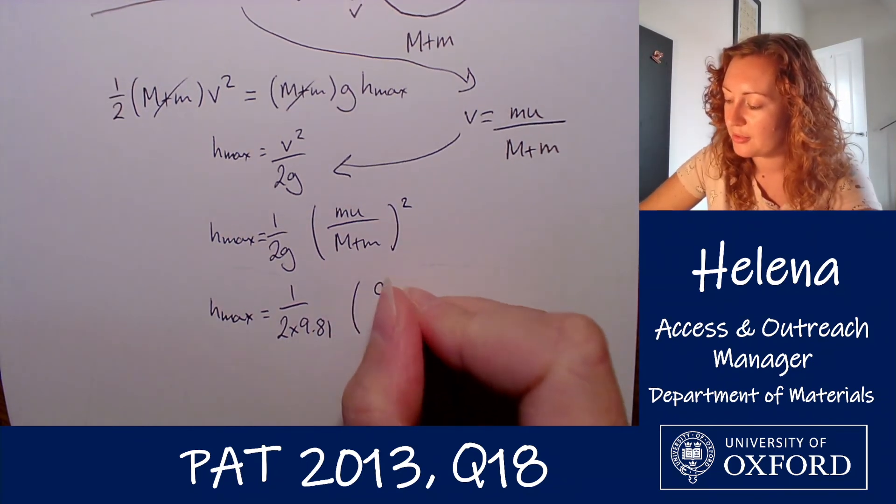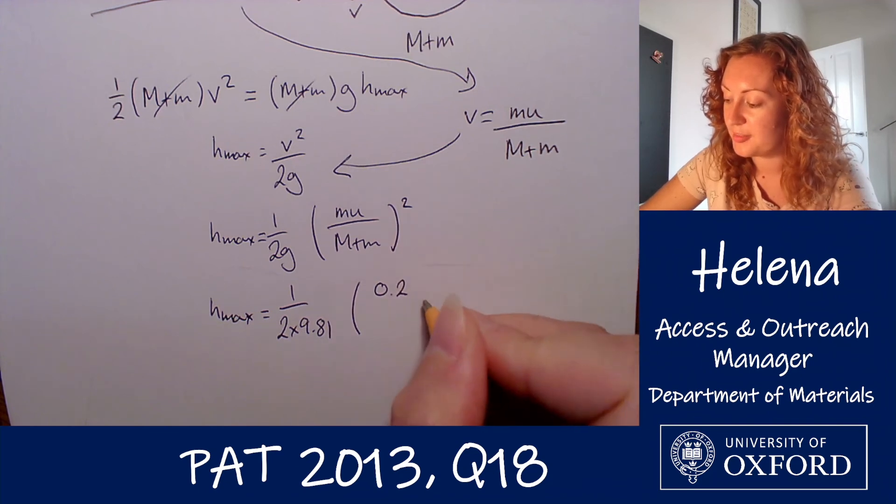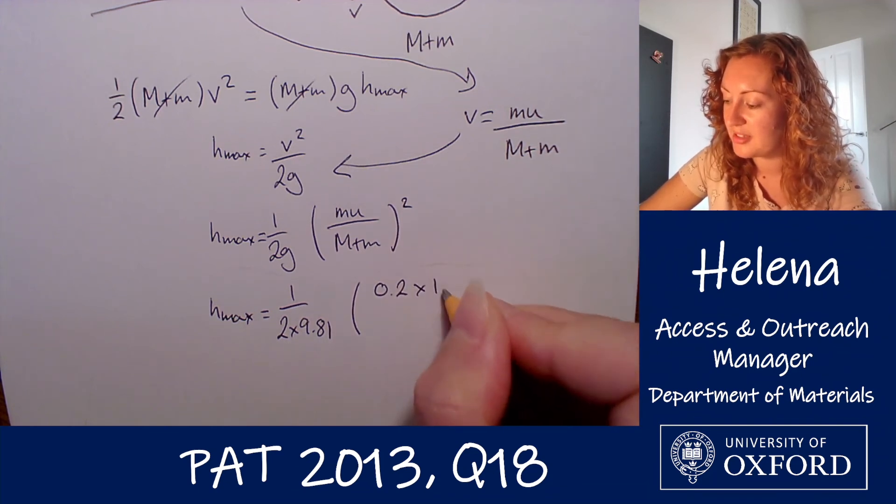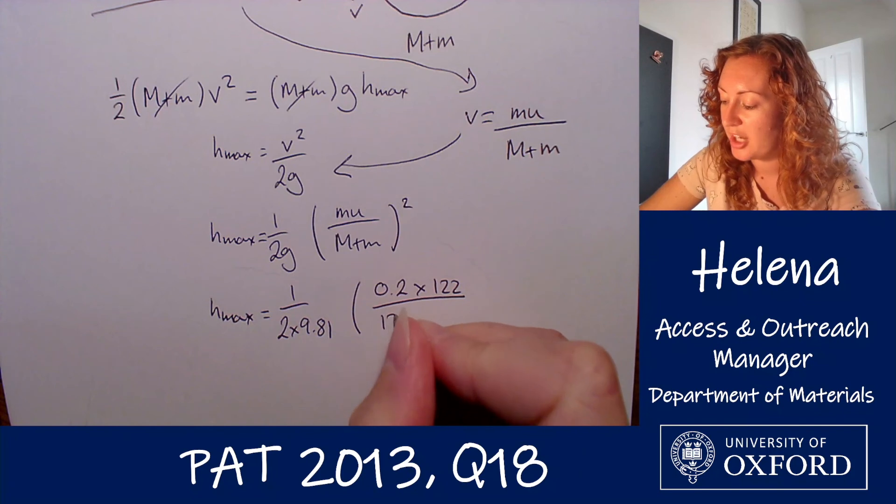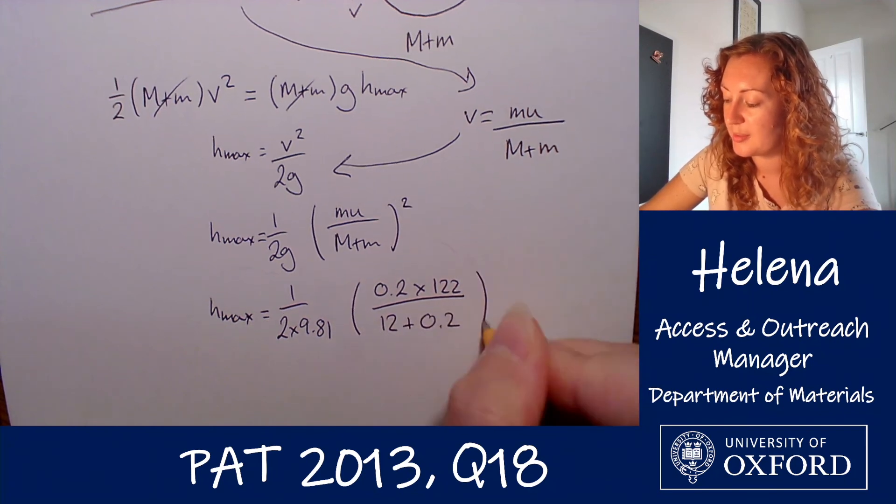And that equals, putting the rest of the numbers in, 0.2 times 122 meters per second divided by 12 plus 0.2, the sum of the masses there, all squared.